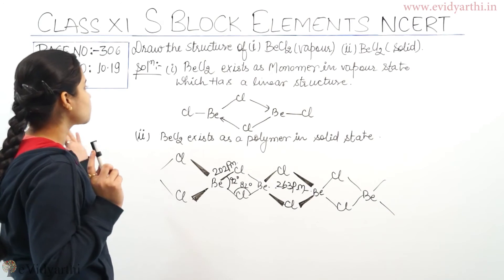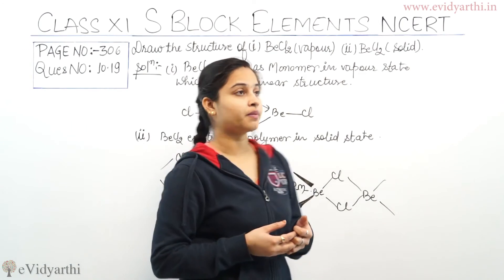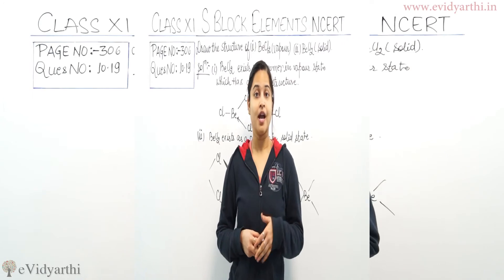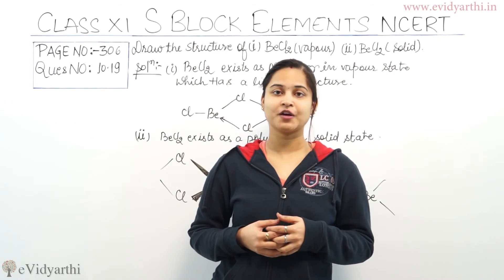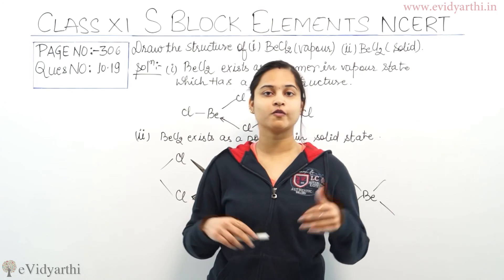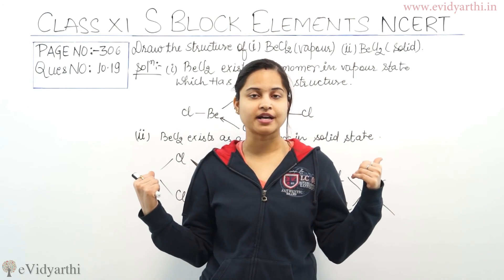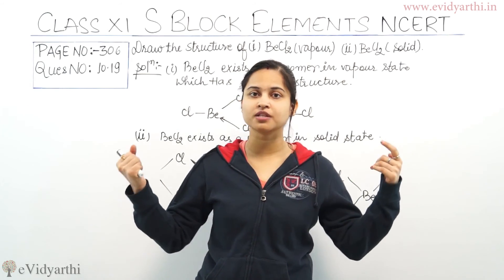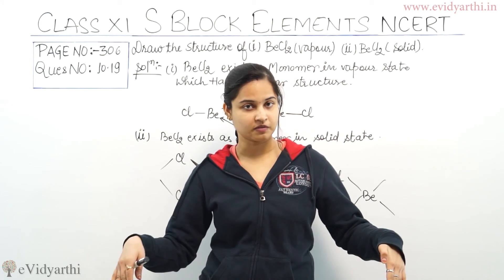So these are the structures of Beryllium Chloride in vapor state and Beryllium Chloride in solid state. I hope these two structures have been clear to you all. If you have any doubt regarding the structures of BeCl₂ in vapor as well as in solid state, please do let me know in the comments below.